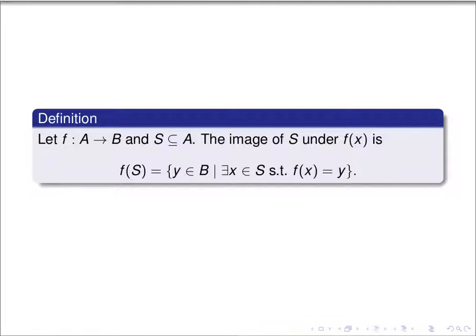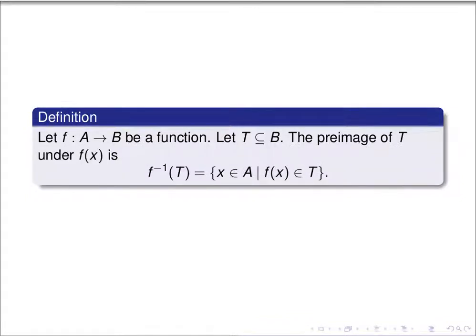We denote this f of S — it's the set of all y in B so that for some x in S, f of x is equal to y. If f is a function from A to B and T is a subset of B, then we can define the pre-image of T as the set of all x in A so that f of x is in T. That's called the pre-image of T under f.